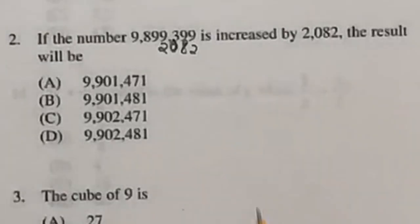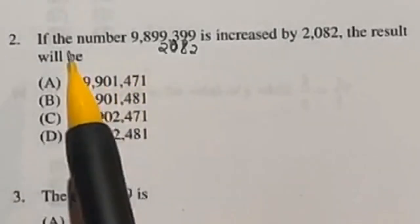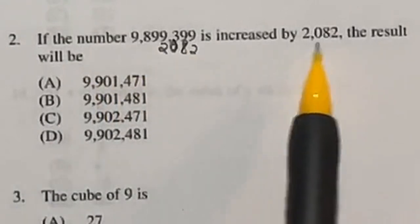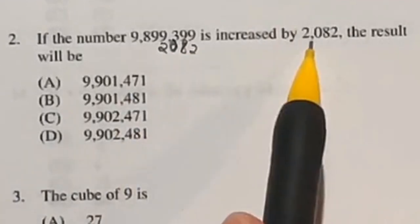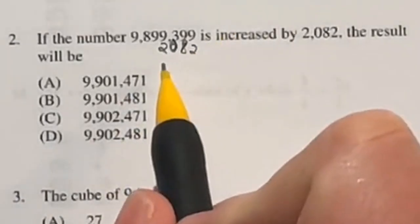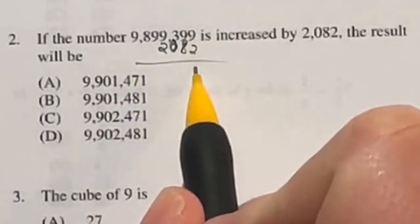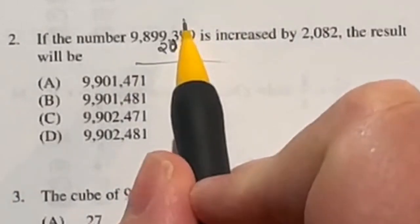Number two on the ASVAB math kind of seems like a gimme. It says if this number right here is increased by 2,082, the result will be what? So we just need to add these two together. So I rewrote this guy right here, and let's go ahead and start adding. We got 9 plus 2, which is going to give me 11. Carry the 1 right here.